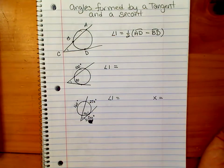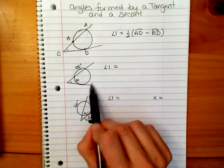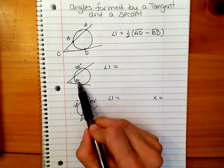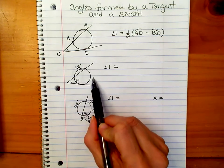Let's try a couple examples. Again, remember that all the way around the circle is 360 degrees, so if they give you these two, you can find this one.